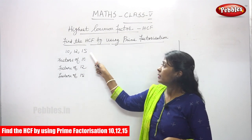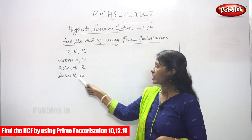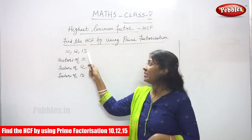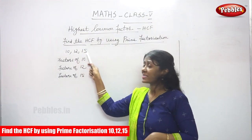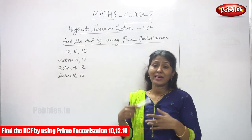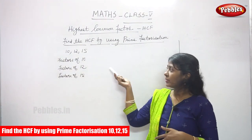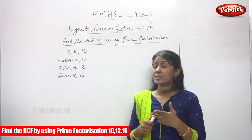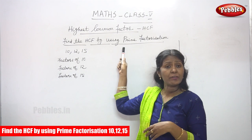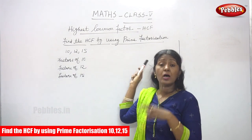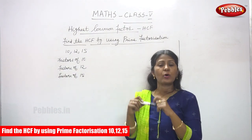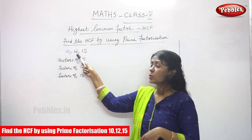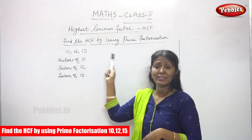Factors of 10, factors of 12, factors of 15. In this question, 10, 12, 15 — 3 numbers are given. In the last class we found HCF for only 2 numbers using the prime factorization method. But now we are going to find the HCF for 3 numbers: 10, 12, and 15.